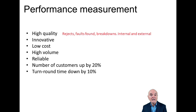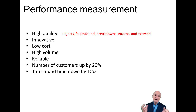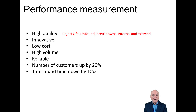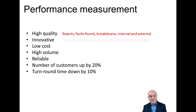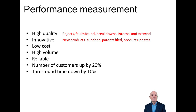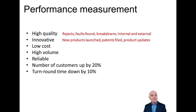So, high quality - relatively easy. We could measure quality by rejects, faults found, breakdowns. All of these problems could be divided between internal and external - do we reject a product part way through the manufacturing process, or is it rejected when it gets to the customer? That's a much more serious situation regarding quality, because it costs a lot of money and a lot of goodwill with the customer. For innovation, we could measure new products launched, the number of patents filed, the amount of money spent in research and development, or how many product updates we've made. We'll be setting targets and then comparing actual performance to those targets.